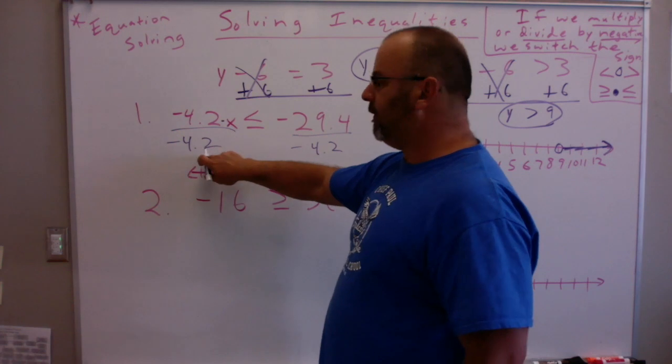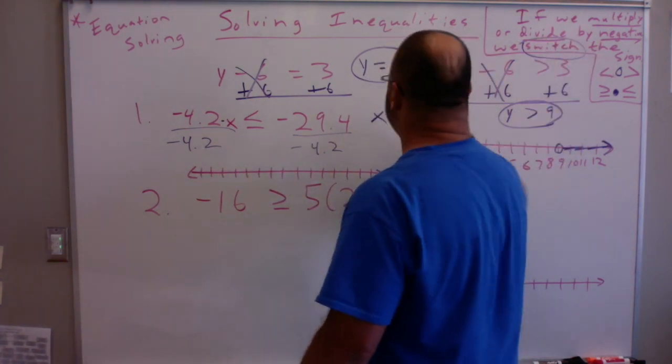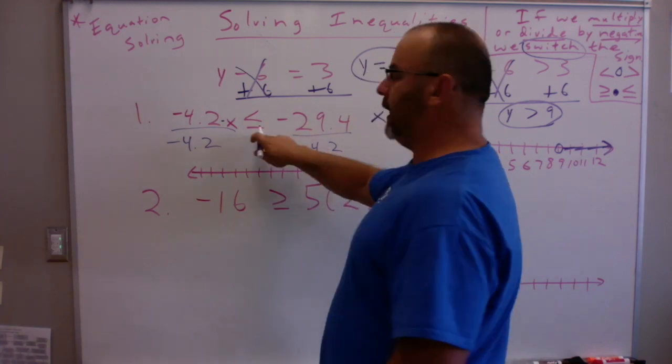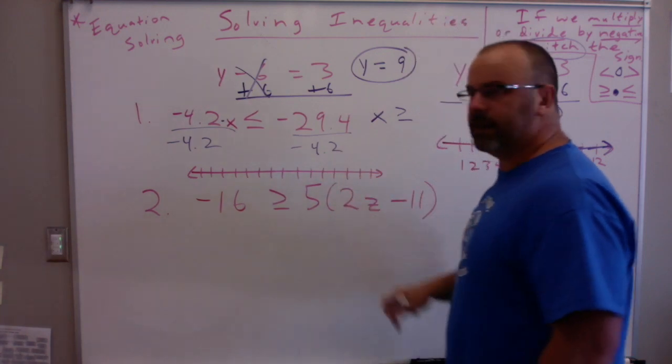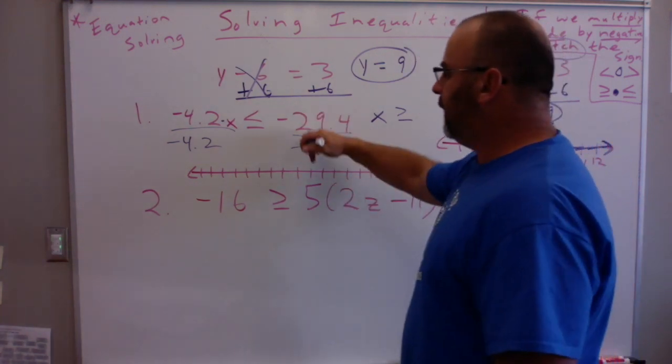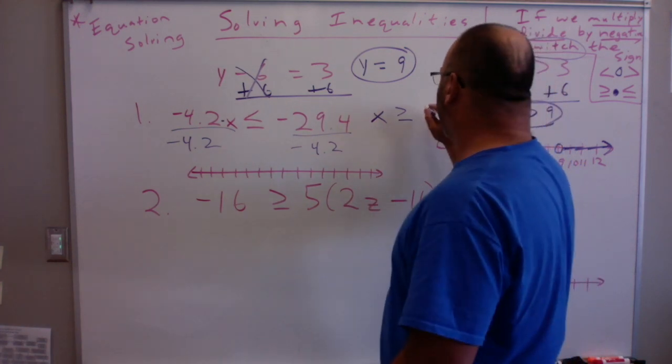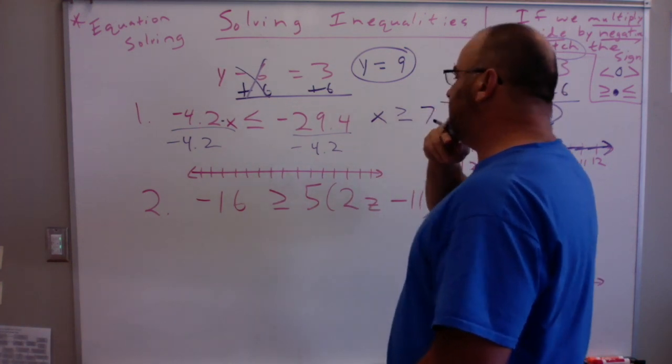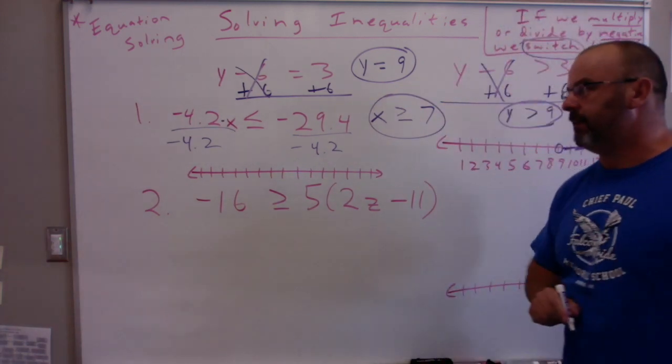Notice I'm dividing by a negative. That means I'm going to switch, remember, switch the sign. So it's going to go from less than or equal to to greater than or equal to. Dividing this out, if a negative divided by a negative is a positive, 4.2 goes into 29.4 seven times. So it's going to be x is greater than or equal to seven.